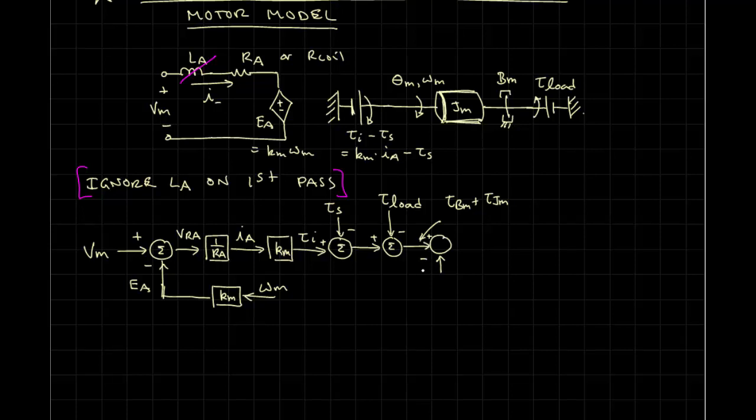If we subtract tau Bm, then the output will be tau Jm.